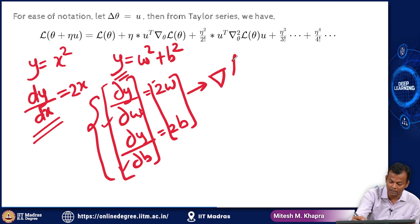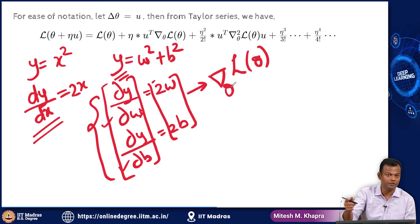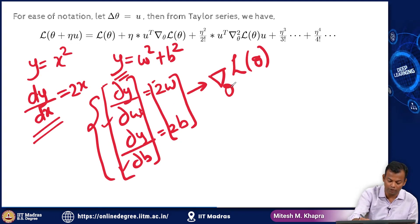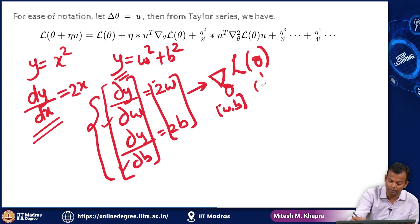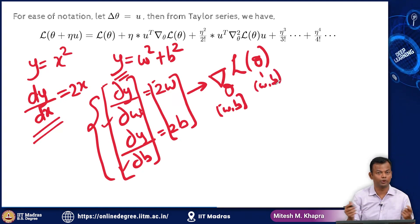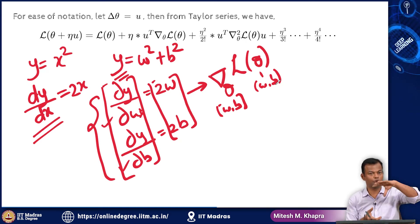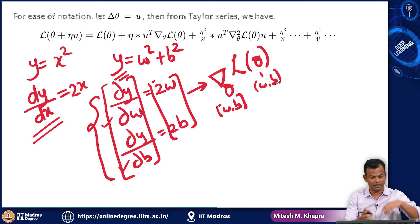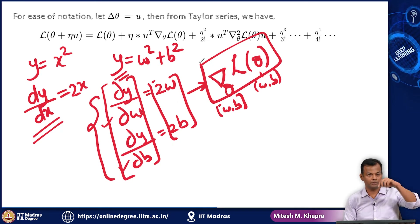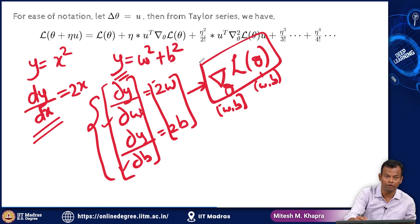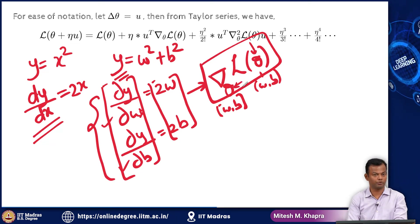The gradient is nothing but the collection of the partial derivatives. So the gradient in this case would be (2w, 2b) — the collection of all partial derivatives is called the gradient. In this case I have only two variables, so I will have two partial derivatives, collect them, and get the gradient vector, which is a two-dimensional vector in this case.